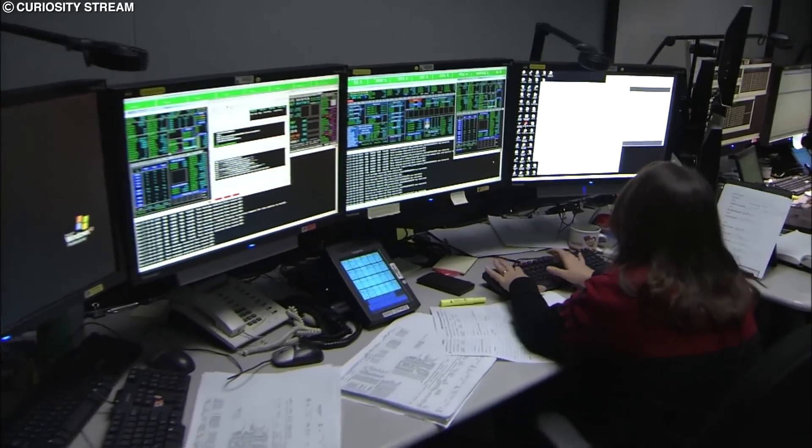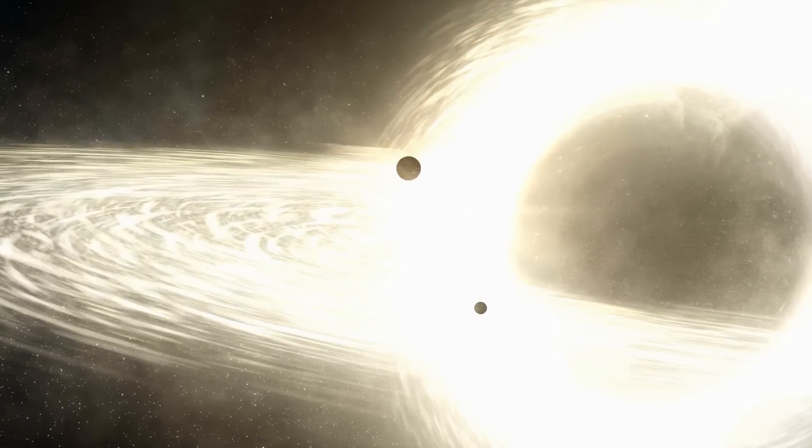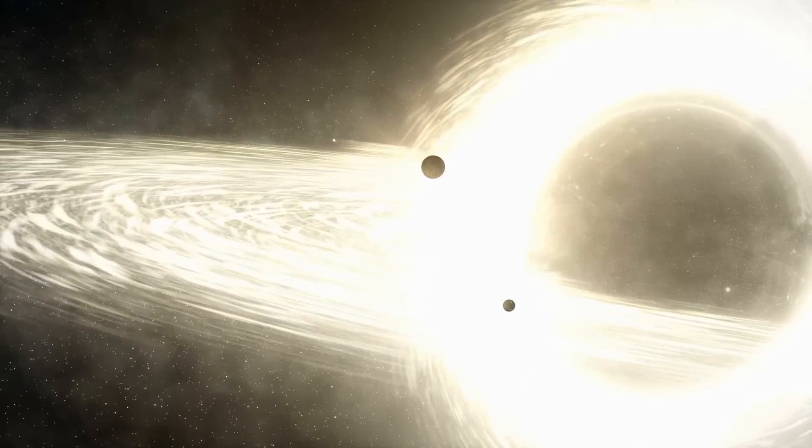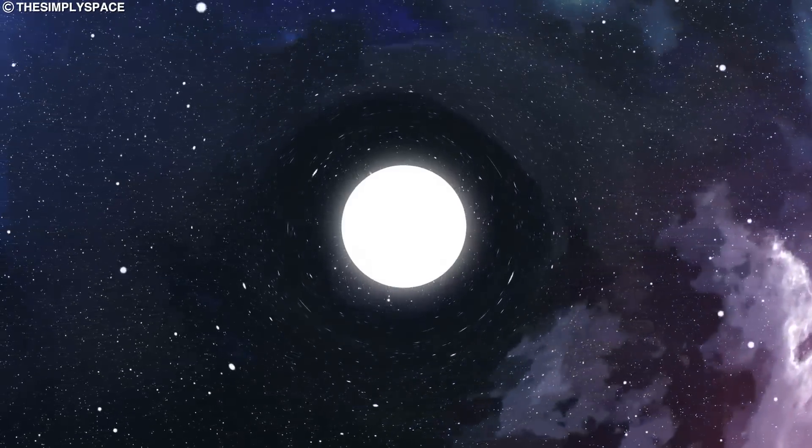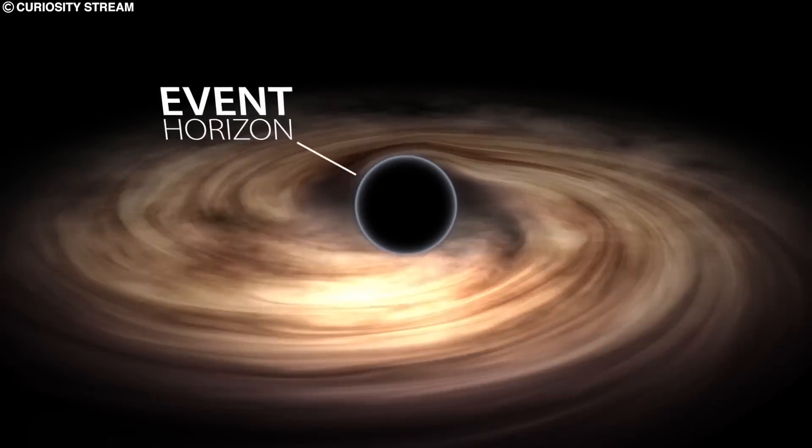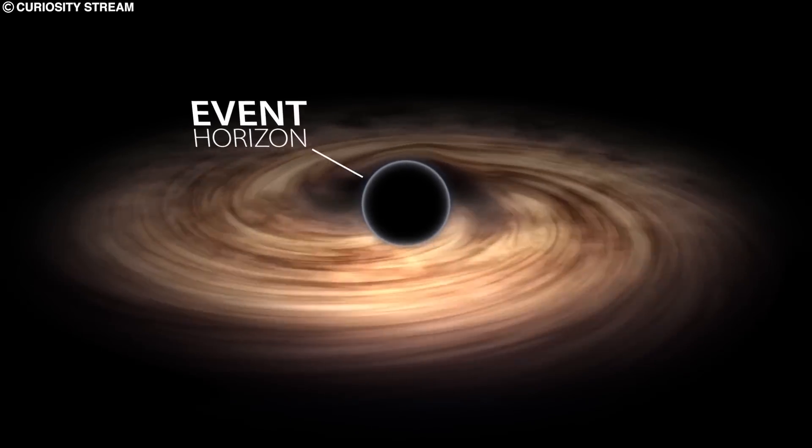The team had initially suspected that the supermassive black hole Sagittarius A was the obvious culprit. This is because black holes can theoretically accelerate and shoot particles out into space, even as they appear to engulf everything else into the event horizon.